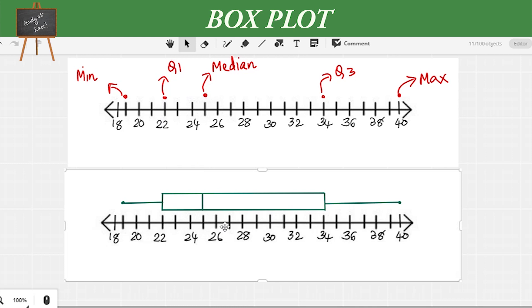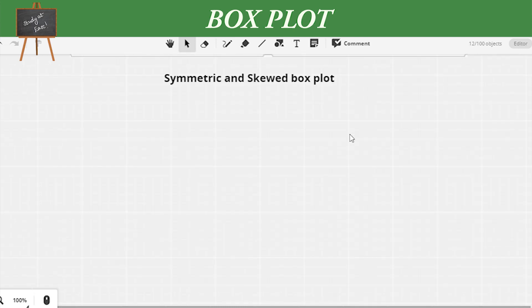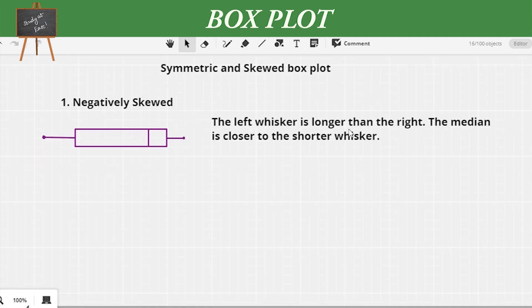Now let's look at symmetric and skewed box plots. The first one is negatively skewed. In the figure, the left whisker is longer than the right, and the median is closer to the shorter whisker.